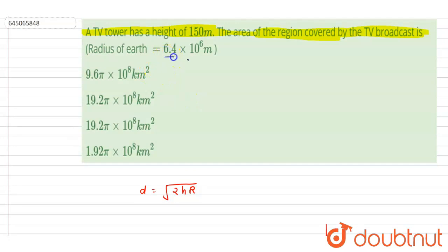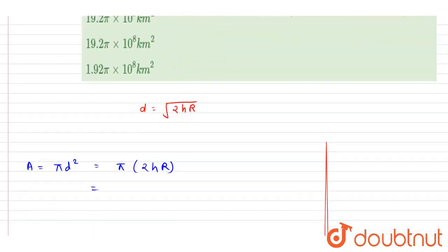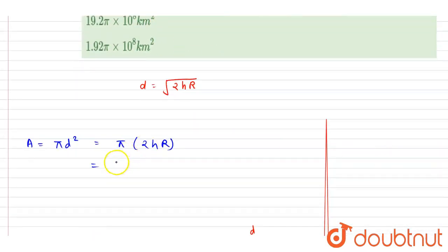And the radius of the earth is 6.4×10⁶. So I will write down π×2×h is 150× the radius of the earth is this, ×10⁶, right?